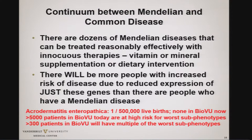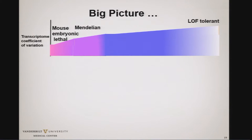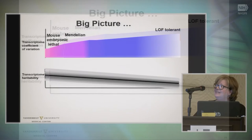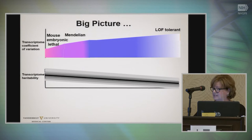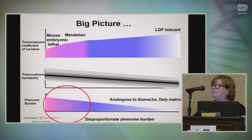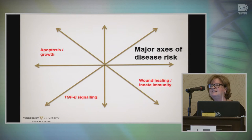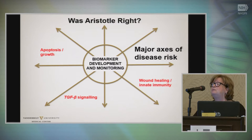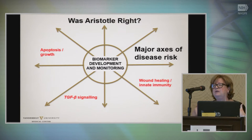300 patients have multiple of the worst subtypes that could maybe be ameliorated with zinc supplementation. In the big picture, there's a continuum from mouse embryonic lethal to Mendelian to other genes where the coefficient of variation on the transcript level varies. Nature is basically saying for the loss-of-function tolerant genes, it doesn't matter how much or how little you have. Mendelian diseases fit on the major axes of disease risk, raising the possibility that rather than gene-specific treatment, we could work on these axes: wound healing, innate immunity, TGF-beta signaling, apoptosis and growth.